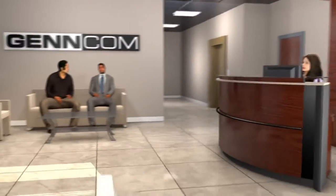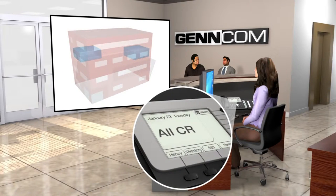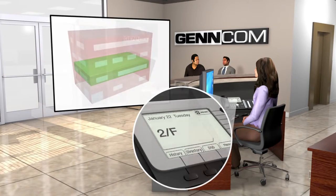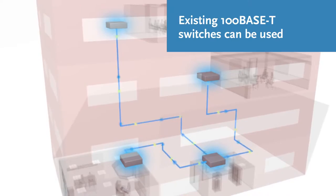With CobraNet networked audio, any audio input can be dynamically sent to any combination of audio outputs on the network via software commands, providing excellent signal routing flexibility. CobraNet does not require special hardware, and you can use existing switches that are 100 megabits per second or faster.